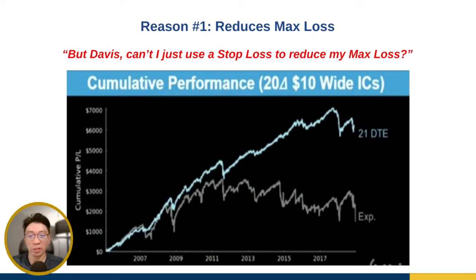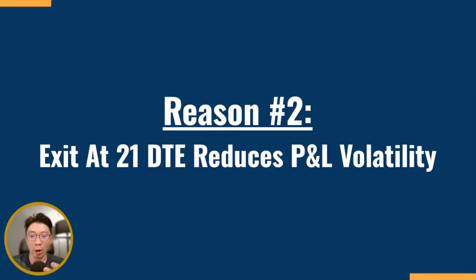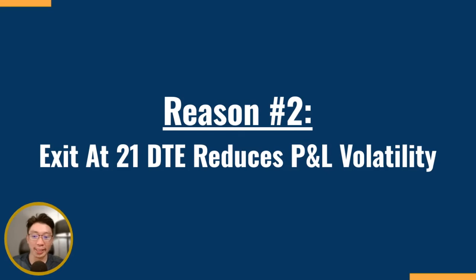So the first important reason to use exit at 21 DTE is to reduce your max loss. The second reason is that exiting at 21 DTE reduces P&L volatility. P&L volatility is very important because it actually affects your mental state — your psychology. It's the P&L swing, also called variance. Imagine today you're up $500 and tomorrow you're down $600 — that is P&L volatility.